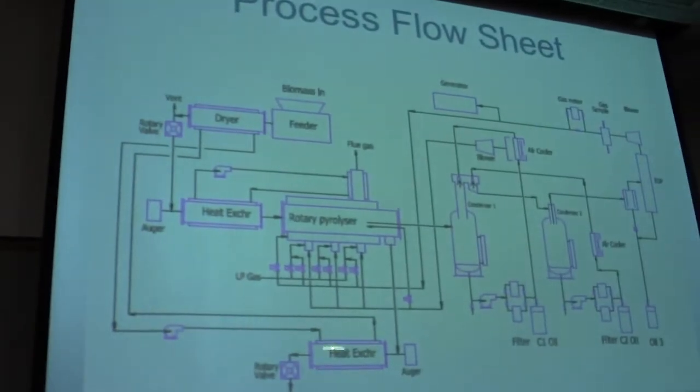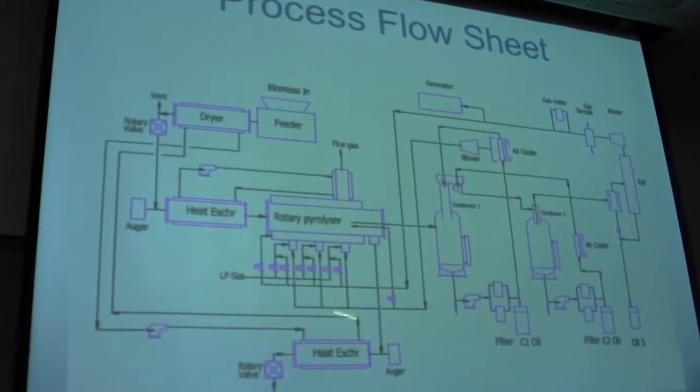This is a process flow sheet. So our rotary pyrolyzer is here. The feed material is dried using heat that we recover from the char. We've got different ways of being able to do that. It's also getting an additional boost in temperature and preheat using heat that we recover from the flue gas from our gas burners. As I mentioned, the material goes into a series of condensers. I'm showing two of them here. If you had a greater need for more fractionation, we could have more condensers. I've seen five, six, seven, even more condensers when people are really trying to do some interesting things.